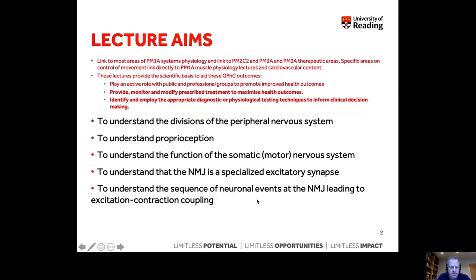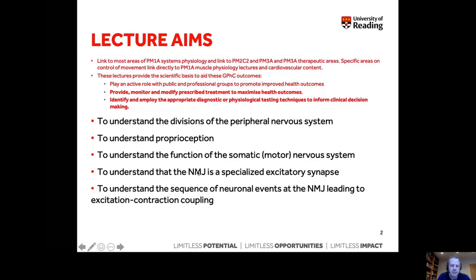We'll also understand the sequence of neuronal events at the neuromuscular junction that lead to excitation-contraction coupling — the release of a neurotransmitter that causes muscle contraction. This content overlaps with muscle physiology. The final screencast will cover the neuronal side of the NMJ, and subsequent screencasts on muscle physiology will pick up the muscular side. Make sure you look at both complementary lectures, and in the examination include appropriate information from all lectures.